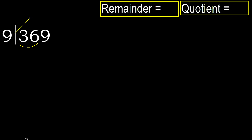9. Multiply by which number is nearest to 36 but not greater? 9 multiplied by 5 is 45, which is greater. Multiply by 4: 36 is not greater.